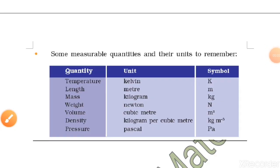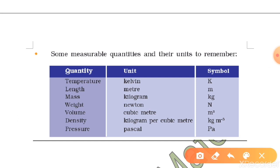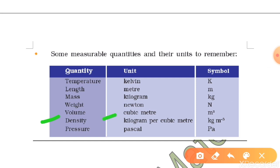Now have a look at a few physical quantities and their SI units with symbols. Temperature: SI unit is Kelvin, symbol K. Length: SI unit is meter, symbol m. Mass: SI unit is kilogram, symbol kg. Weight: measured in Newton, symbol N. Volume: measured in cubic meter. Density: unit is kg per cubic meter. Pressure: measured in Pascal, written as Pa.